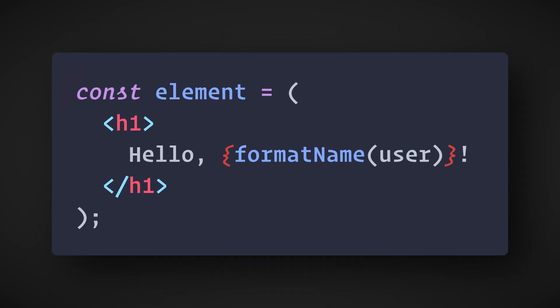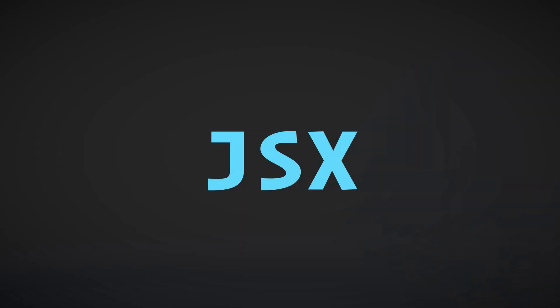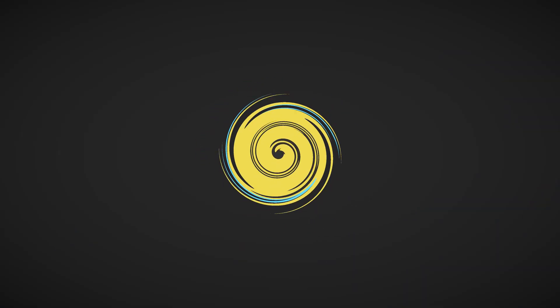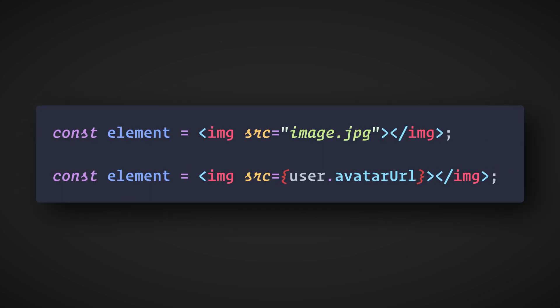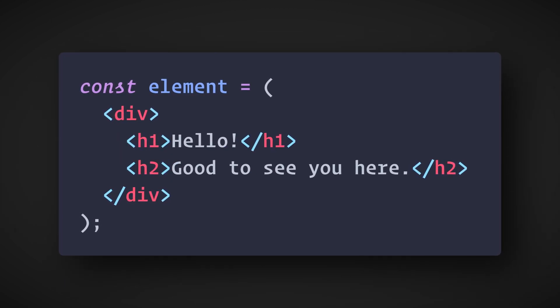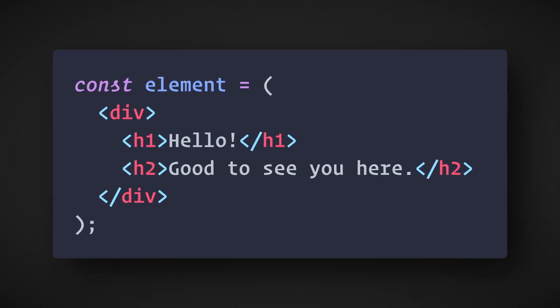We can also split JSX over multiple lines for readability by wrapping it in parentheses. We can also use JSX inside of conditionals and loops, assign it to variables, accept it as arguments, and return it from functions. This is because JSX compiles into regular JavaScript. We can also add attributes just like in HTML and use either quotes for string literals or curly braces for JavaScript expressions as the attribute's value. We can also nest JavaScript tags within other tags just like in HTML, but browsers have no idea what to do with JSX.